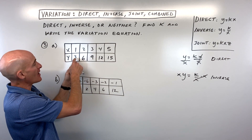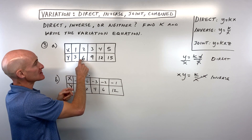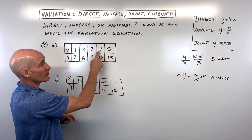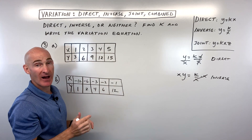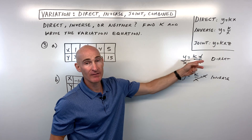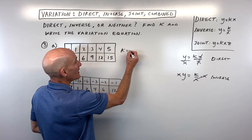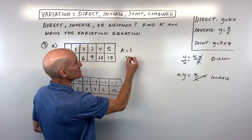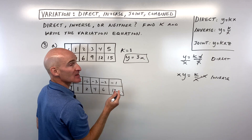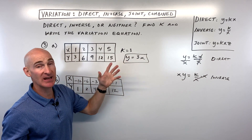Testing table A: 3 divided by 1 gives 3, 6 divided by 2 gives 3, 9 divided by 3 is 3, 12 divided by 4 is 3, and 15 divided by 5 is 3. Since y divided by x gives the same value each time, this is a direct variation equation with k equal to 3. The equation is y equals 3x. Checking: 3 times 5 equals 15, which matches.